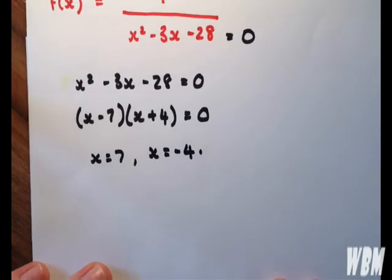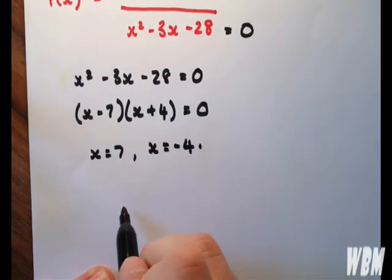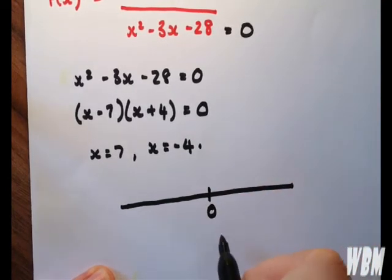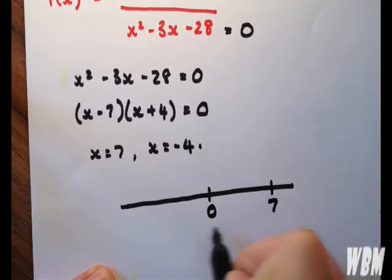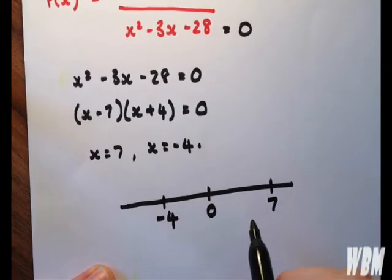These are the two numbers that we want to exclude from our domain. If we write it as a number line with 0 here, 7 is there and minus 4. So if we call this our domain,